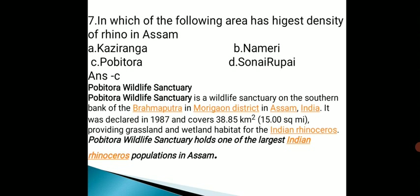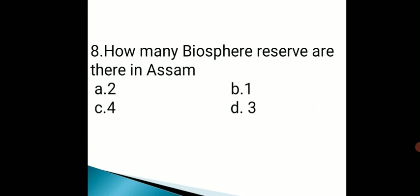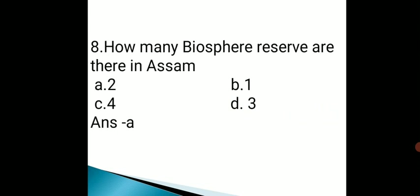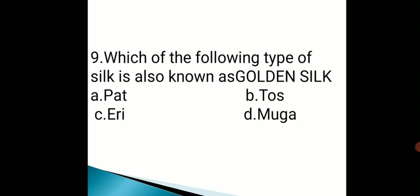Next question: how many biosphere reserves are there in Assam? Options are 2, 1, 4, 3. The correct answer is option A, that is 2 biosphere reserves in Assam.